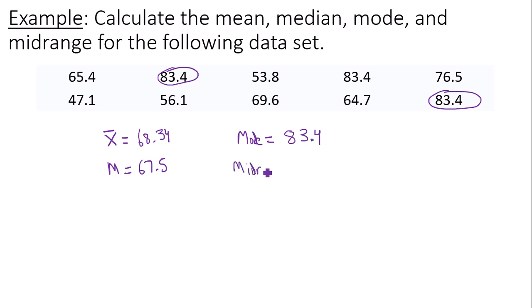And then let's do a midrange calculation. The midrange is the minimum value plus the maximum value divided by two. So your minimum value in this case, the smallest number I see would be 47.1. And the largest number I see would be looks like 83.4. Which by the way, it looks like 83.4 actually occurred three times. So it's definitely our mode. Alright, so 47.1 plus 83.4, we divide by two. And when you do that, you're going to get an answer of 65.25.